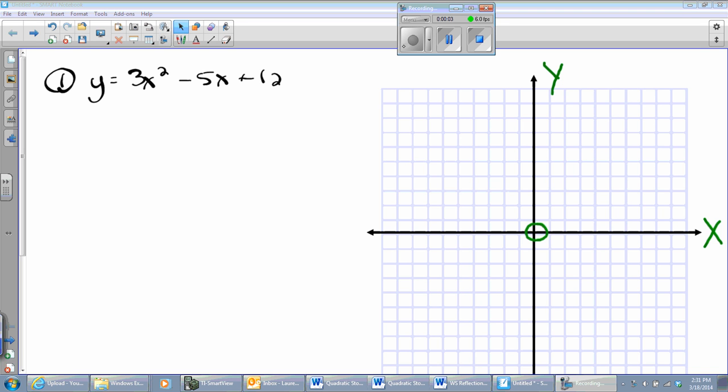Hello algebra students, Mr. Lawrence here, and we are going to run through three really quick problems graphing quadratics. Remember, the first thing I want to do is find my discriminant. So I'm going to say a, b, c, easy as 3, negative 5, 12.